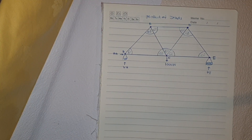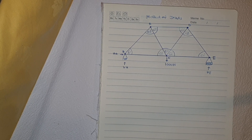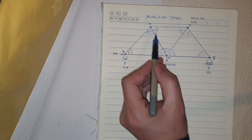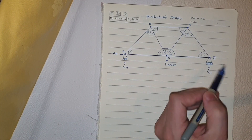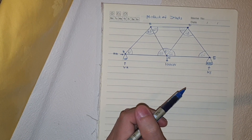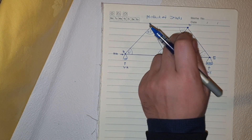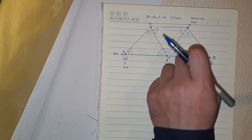Hello guys, in this example I'm going to teach you about the method of joints — one of the methods we can use for solving truss problems in statics. In this example we have five joints: one, two, three, four, five, and we have seven members: one, two, three, four, five, six, seven.